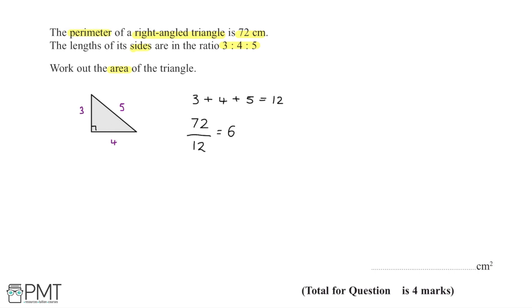Each side length must be scaled up by a factor of 6. To work out the area, I need to take the base length and multiply it by the height, then divide by 2.